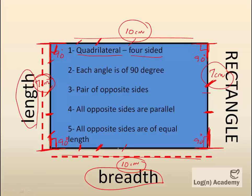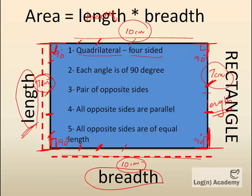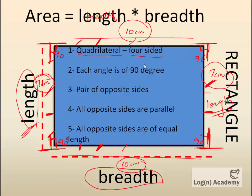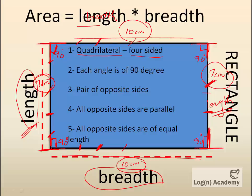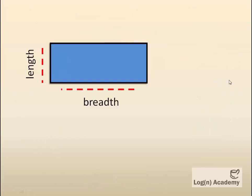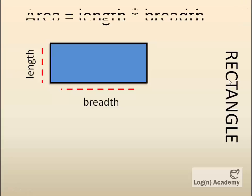So we have two breadths and two lengths. For example, this is a breadth and this is a breadth; this is a length and this is a length. The area of a rectangle is found by the formula: length multiplied by breadth. When we multiply the length by the breadth, we find the area of the rectangle. This formula — length into breadth — is what we use.